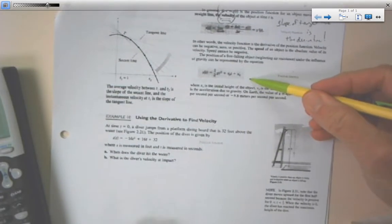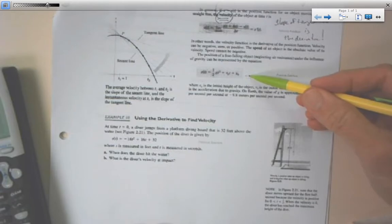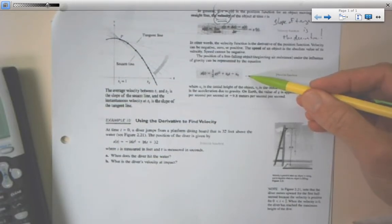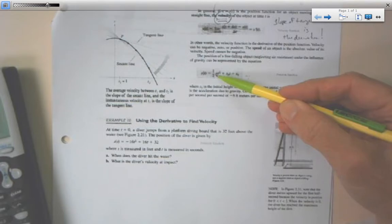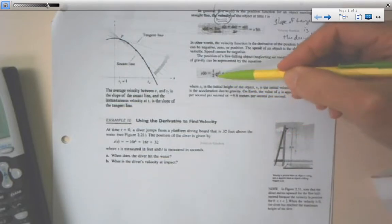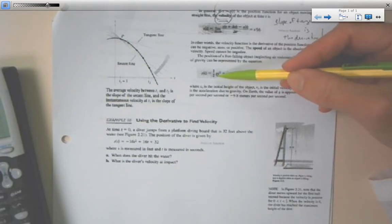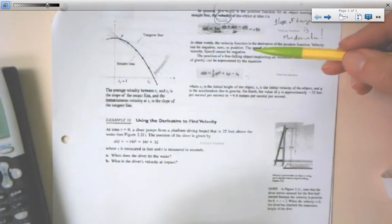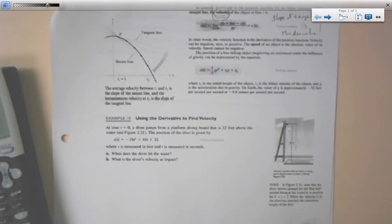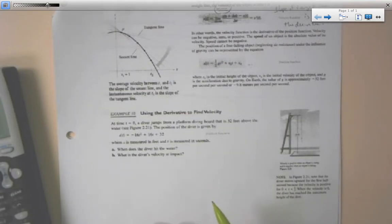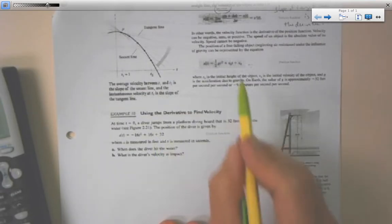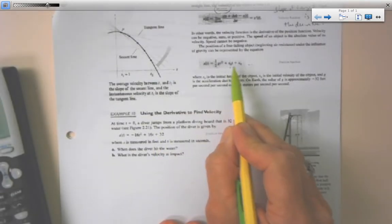There's your general projectile equation that you've had since pre-calculus and probably in physics also. As you know, g is the pull of gravity, and if you're measuring it in feet per second, it's negative 32 feet per second. If you're measuring in meters, it is negative 9.8. Negative meaning it's pulling down because gravity is pulling down toward the Earth. We know that it's initial velocity, and that's height above the ground.